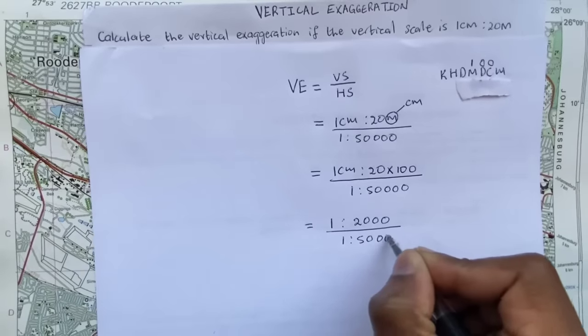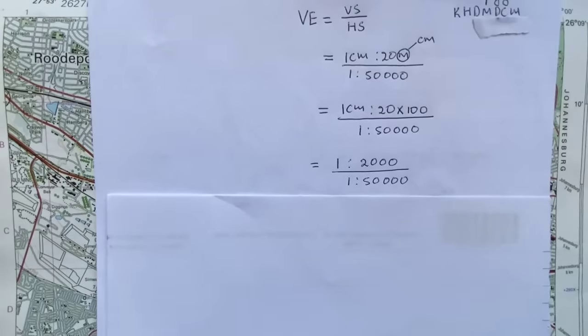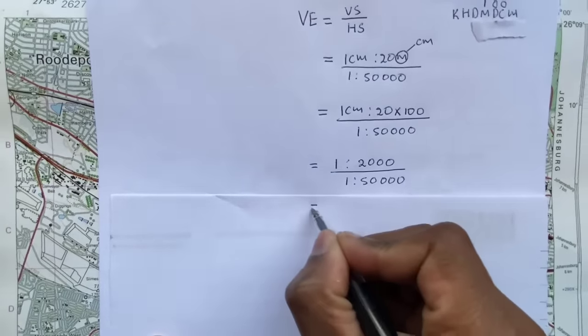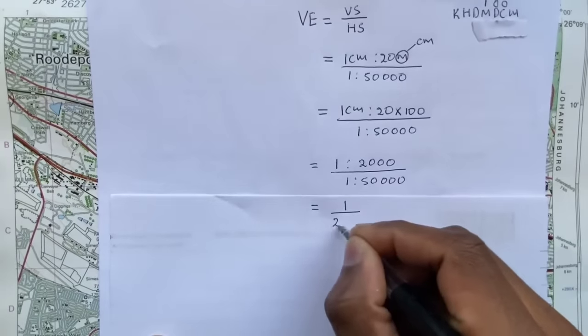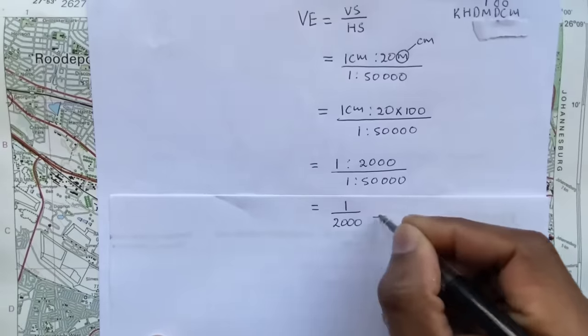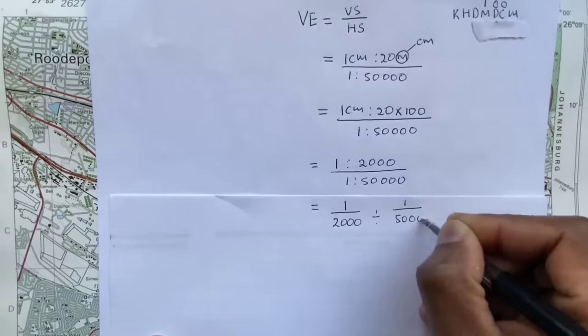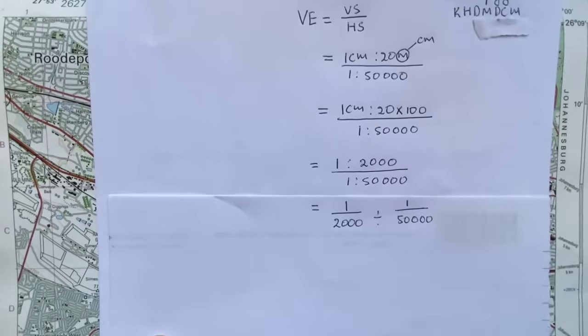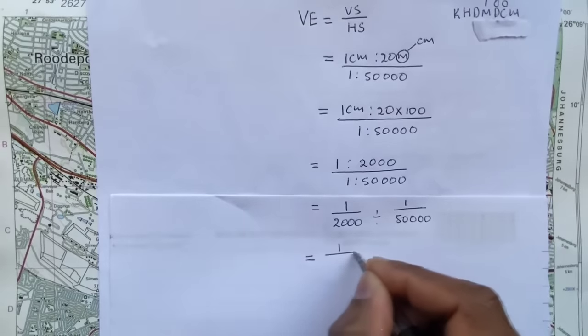So this is still divided by 1:50,000. From here onwards it's just basic mathematics. So this equals 1:2,000. 20 times 100 will give me 2,000. This is all divided by 1:50,000. So I have both my top and bottom as ratio scales, meaning I can represent this as one over 2,000 divided by one over 50,000.